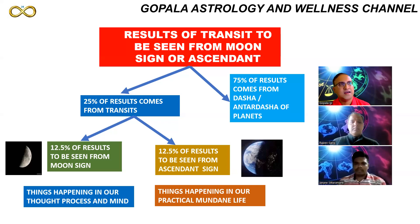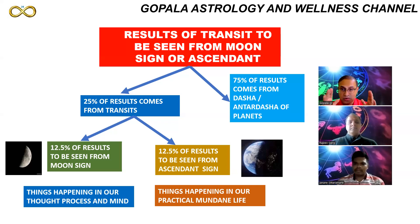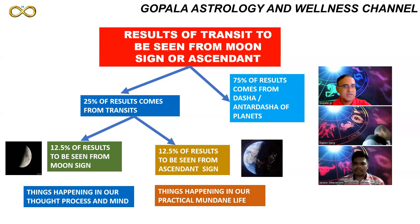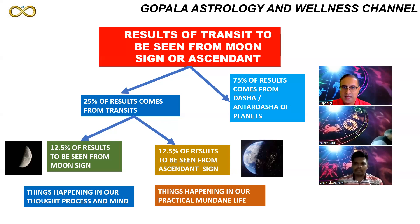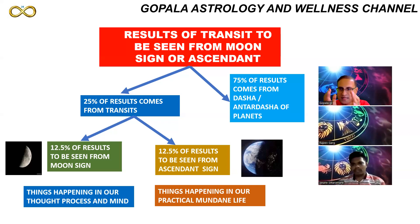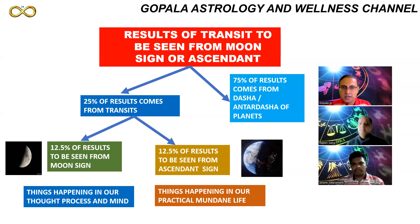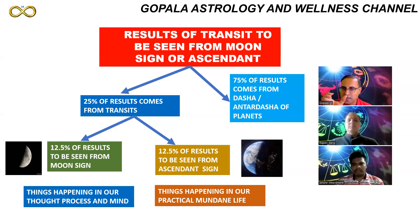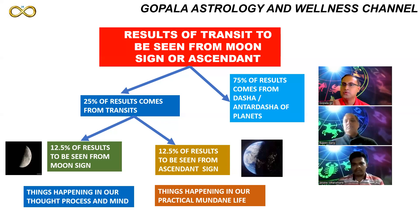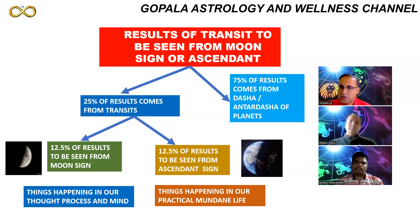The host used a library analogy: when looking for a book, you first check the catalog to find the room, then the shelf, then the rack number. Similarly, in dasha analysis you go from maha dasha to antar dasha to pratyantara dasha, and even to sukshma pratyantara dasha — four levels deep — to understand whether results are favorable or not. If the dasha lord — the dashanatha — is in a kendra sthana (houses 1, 4, 7, or 10), you will get very good results.